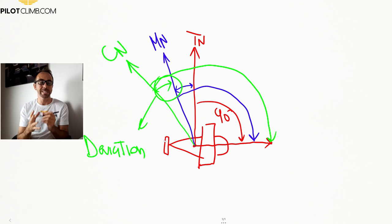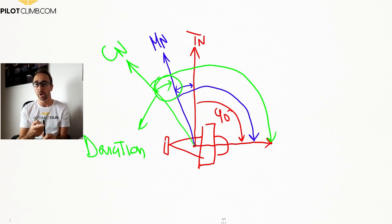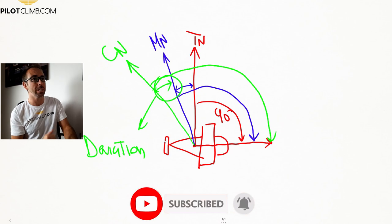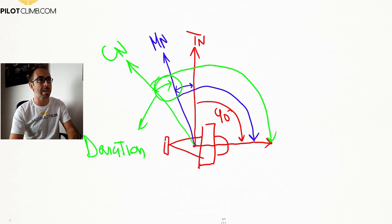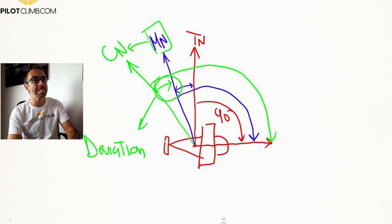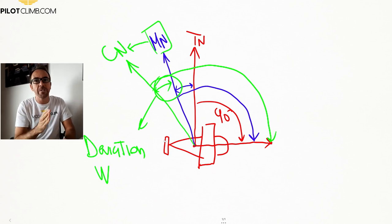If you want to know what the pilot is reading and you only know true north, you need to know both your variation and your deviation. Deviation can be easterly or westerly. In the drawing, the compass north is to the left — west — compared to the magnetic north, so in this case the deviation is westerly.